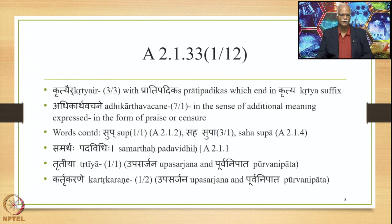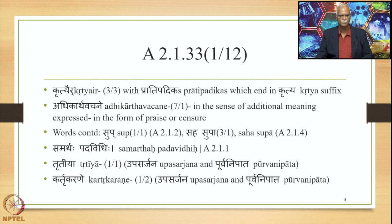This Sutra has got two words explicitly stated. Krityaira, which is 3/3, meaning that with the Pratipadikas which end in a Kritya suffix. And Adhikartha Vachane is 7/1, which means in the sense of additional meaning expressed in the form of either praise or censure. Words continued are Subh, Sahasupa, and Samartha Padavidhi. The other word continued is Trithiya.